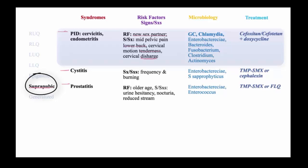As with salpingitis and tubo-ovarian abscess, it is critical to identify gonococcus, which can be easily identified using PCR probes of the cervix. Treatment for gonorrhea with ceftriaxone is the drug of choice. In the absence of gonococcus, cefoxitin or cefotetan plus doxycycline are appropriate.